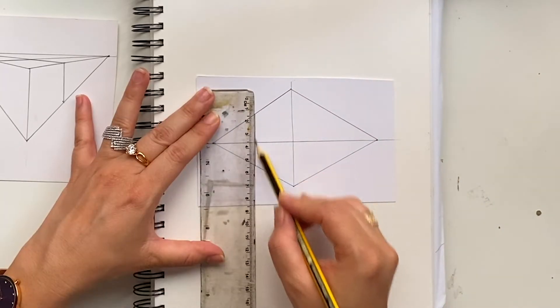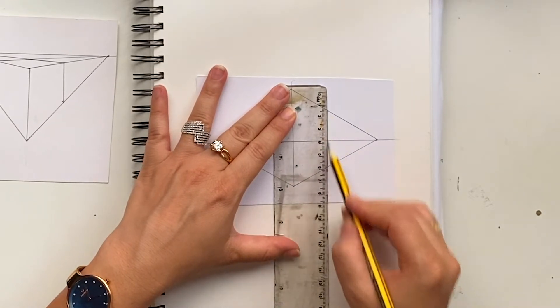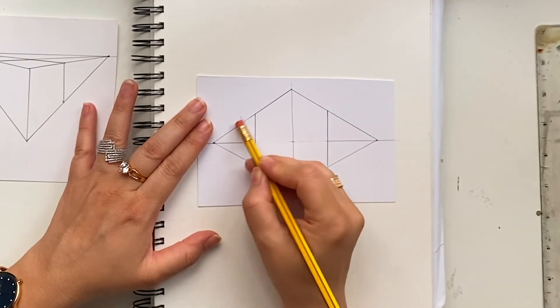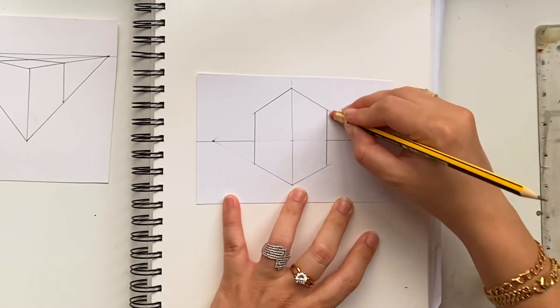When you are drawing the left side of the building, you need to aim to the left side vanishing point. Draw the vertical lines to complete the building.